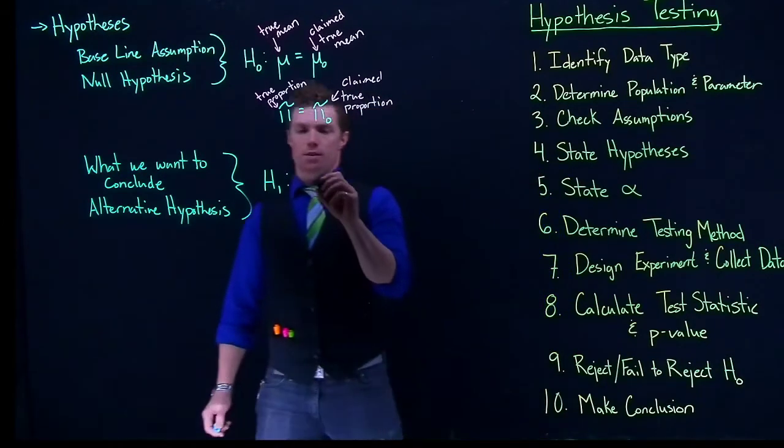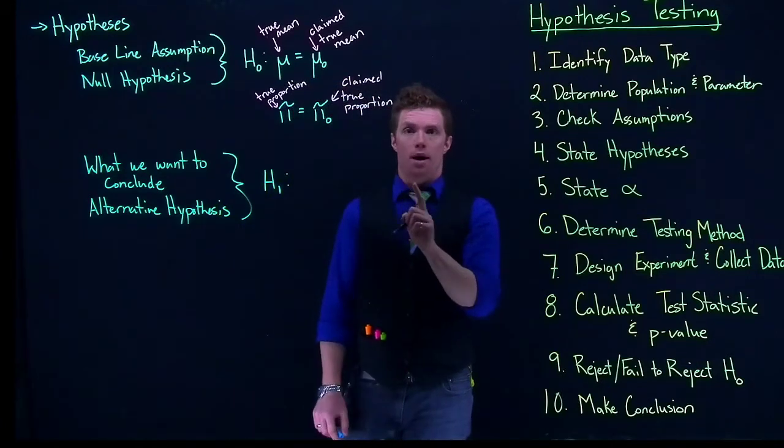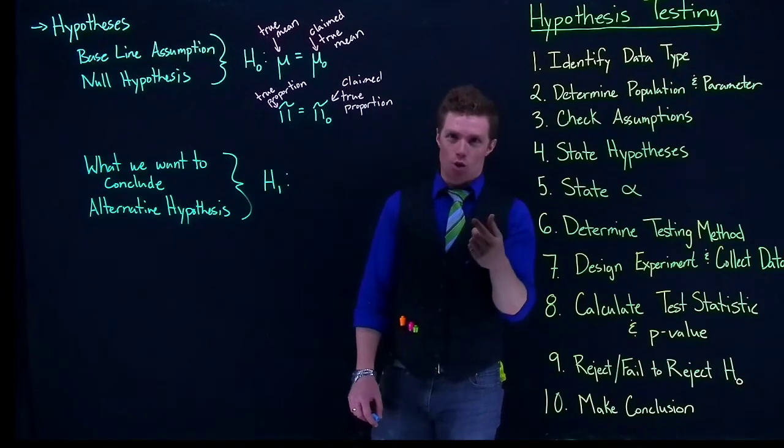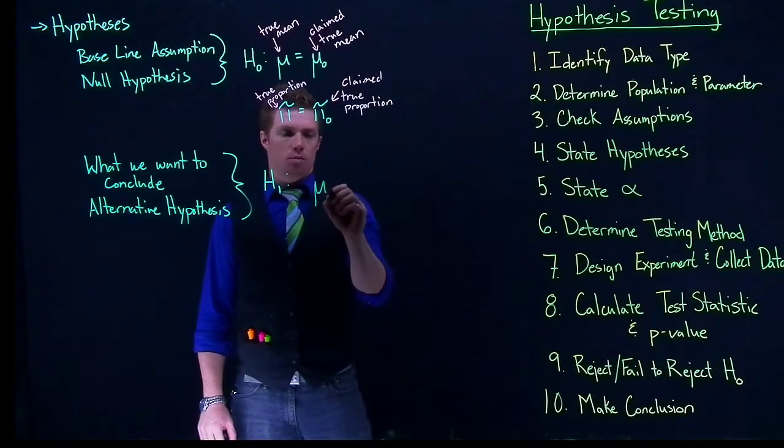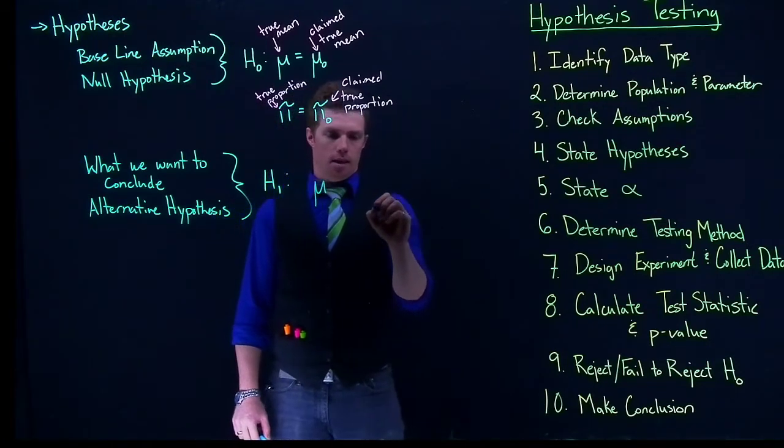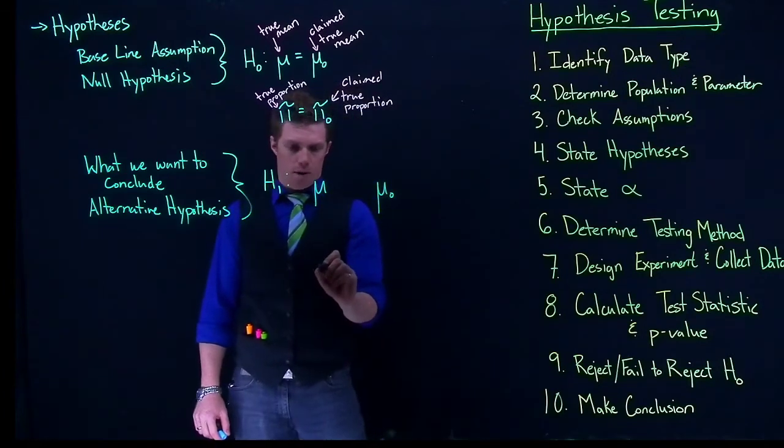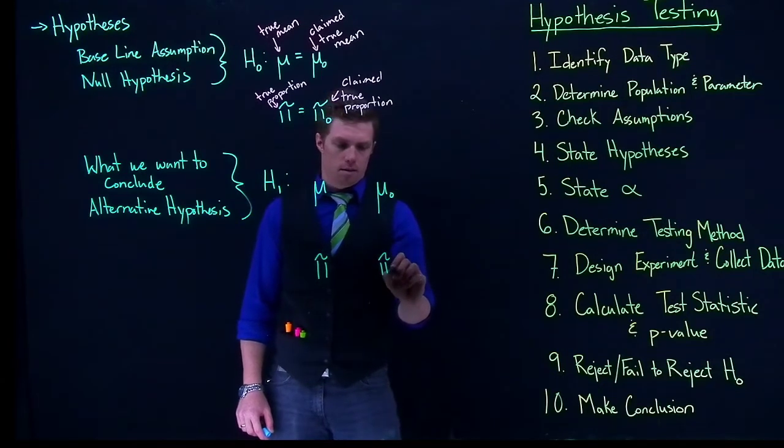So our alternative hypothesis, it actually looks identical to the null hypothesis, except instead of an equal sign, we're going to put in an inequality. So here it could be mu and mu not, or if it's pi, if we're dealing with proportions, we can do pi and pi not.